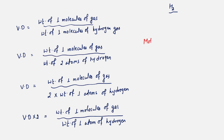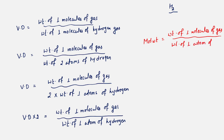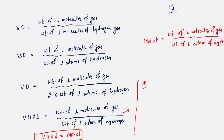Since molecular weight = weight of 1 molecule of gas divided by weight of 1 atom of hydrogen, we get: 2 × vapor density = molecular weight. This is the derived relation. For example, if vapor density is 22, then molecular weight = 22 × 2 = 44.